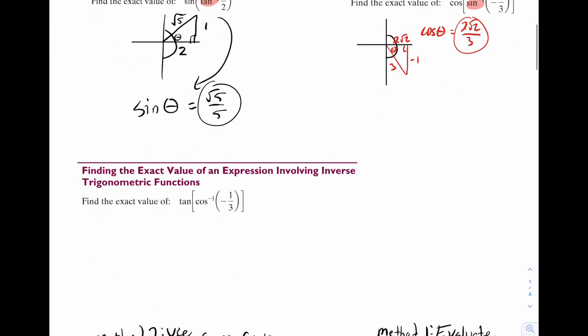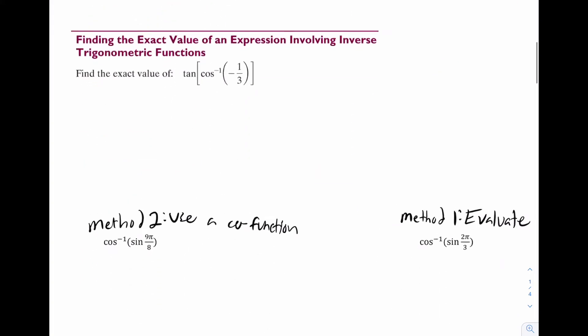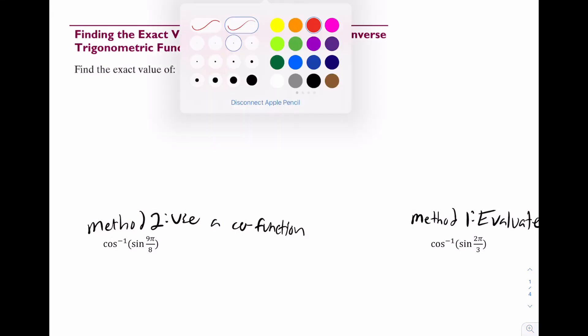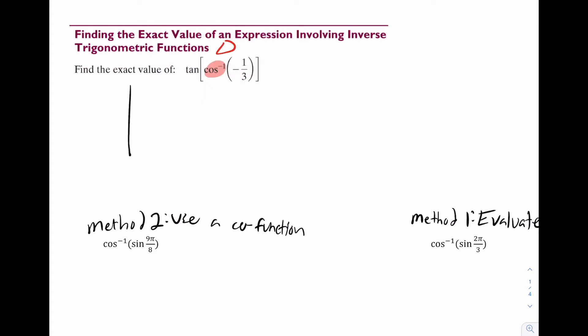Now I'll do a couple more. Let's try one with a tan and a cosine inverse. At this point, you're seeing these are all triangle problems. So it's cosine, so that's one and two, and it's negative, which means it's in quadrant two.